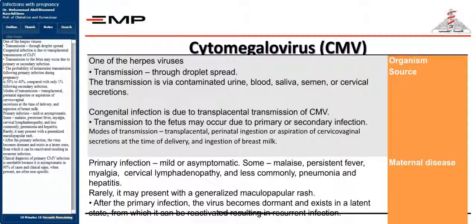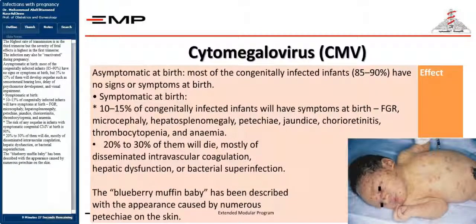Primary CMV infection is mild or asymptomatic, with some malaise, persistent fever, myalgia, cervical lymphadenopathy, and less commonly pneumonia and hepatitis. Rarely, it may present with a generalized maculopapular rash. After primary infection, the virus becomes dormant in a latent state, from which it can be reactivated causing recurrent infection. Clinical diagnosis is unreliable because it is asymptomatic in 90% of cases and clinical signs, when present, are often nonspecific. The highest rate of transmission is in the third trimester, but the severity of fetal effects is highest in the first trimester. The infection may also be reactivated during pregnancy.